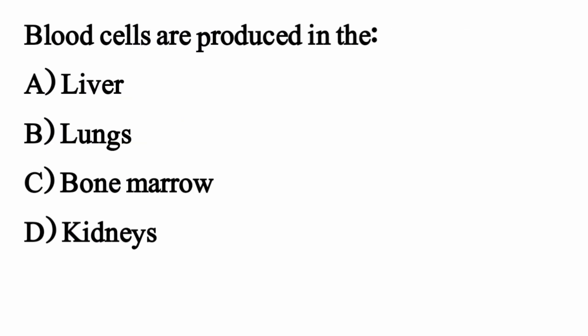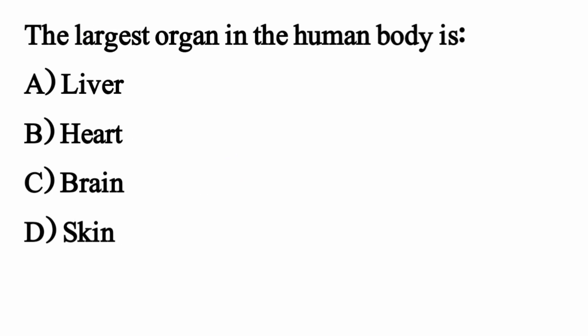Blood cells are produced in — the right option is Option C — Bone marrow. The largest organ in the human body is?